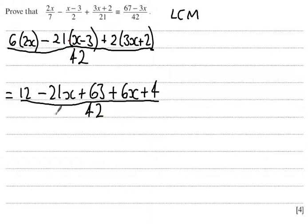If I tidy everything up, we should get 63 plus 4 is 67. 12x plus 6x is 18x, take away the 21x gives me minus 3x. And this is all over 42.